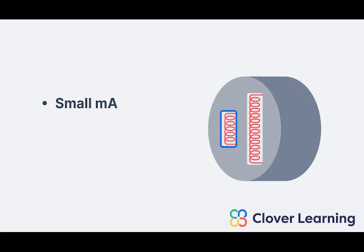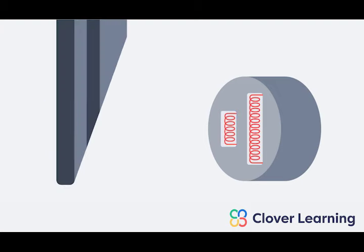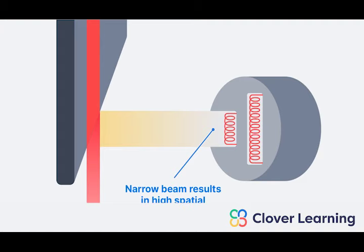The small filament should only be used for small body parts because it can only be used for small exposures. So the small filament has some limitations, but it also has one big advantage. The small filament creates a very narrow and tightly aligned electron beam. And at the anode, it becomes a narrow, tightly aligned x-ray beam. This results in high spatial resolution.